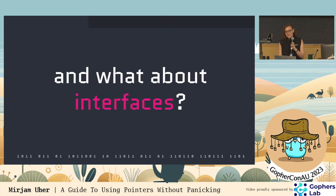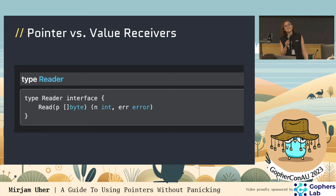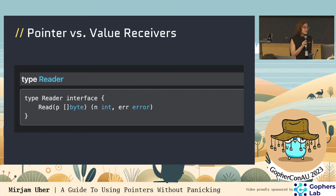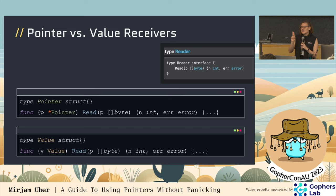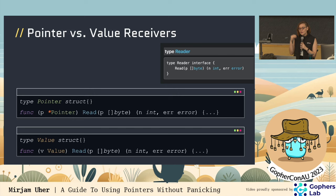What about interfaces? I had to cut half of this talk because it was just about interfaces. Short version: here we have a reader interface with a read function. It's not asking for a pointer or value receiver. I can implement it with a pointer receiver or a value receiver — both implement the reader interface just fine. There are edge cases to be careful about, but in general here's my top tip: if you declare something as a pointer receiver, call that method on it when it is a pointer. If you declare it as a value receiver, call it on its value. Then nothing will go wrong.